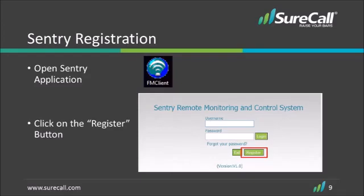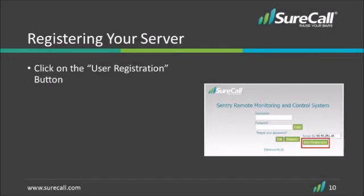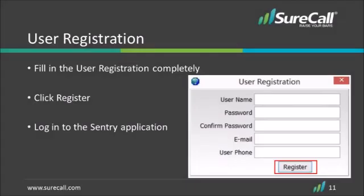Click on the Register button. Then click on the User Registration button. Fill in the User Registration page completely. Here you can choose your user name, create a password, enter the email you wish the alert notifications to come to, and the primary user's phone number. Click Register and log in to the Sentry application using your new name and password.